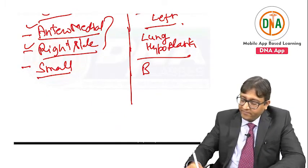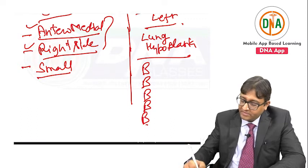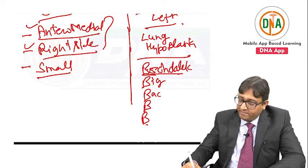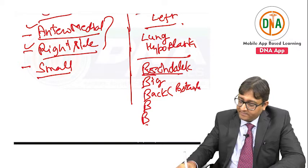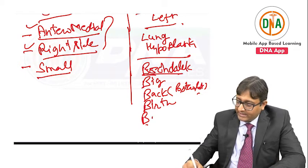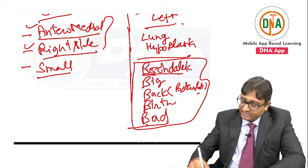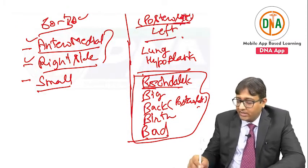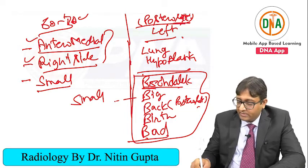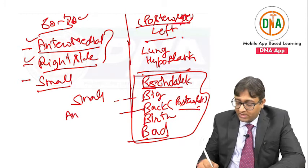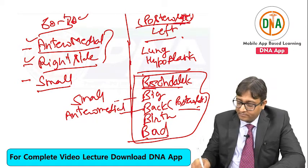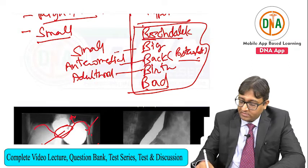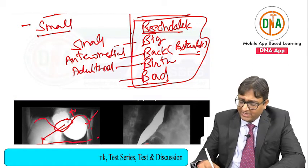We have five B's to remember for Bochdalek: Bochdalek, Big, Back (means posterolateral), Birth, and Bad. These are the five B's to remember for Bochdalek. And just the opposite applies to Morgagni — where Bochdalek is big, Morgagni should be small; where Bochdalek is posterolateral, Morgagni should be anteromedial; where Bochdalek presents since birth, Morgagni is seen in adulthood; and where Bochdalek is bad prognosis, Morgagni has usually good prognosis.